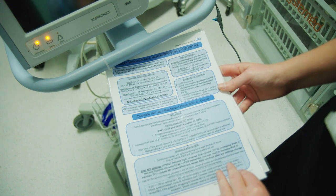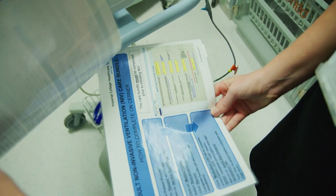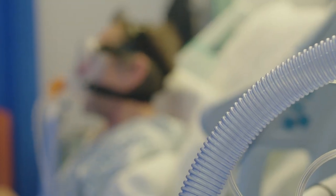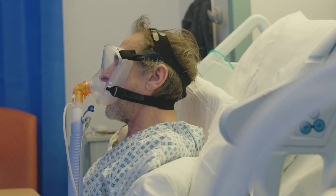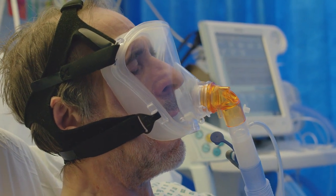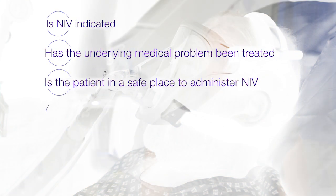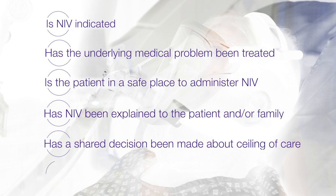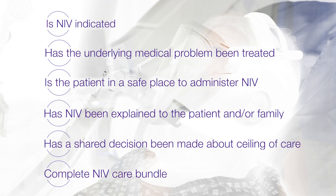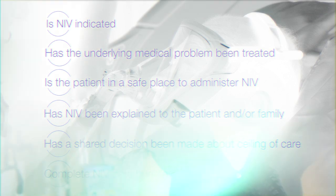The NIV algorithm is there to help guide you through the early treatment of a patient in type 2 respiratory failure requiring NIV. Now your patient is on NIV, ensure you regularly check their pressure areas particularly around the mask, ensure they receive physio, and refer to any other specialities as required including dietitian or speech and language therapy. Staff looking after patients on NIV should ensure they receive regular training and complete their NIV competencies. In conclusion, the key things to take away are: Is NIV indicated? Has the underlying medical problem been treated? Is the patient in a safe place to administer NIV? Has NIV been explained to the patient and/or their next of kin? Has a shared decision been made with the patient about their ceilings of care? Then complete the NIV bundle and CERNA prescription. And finally, safe, effective and patient-centred care equals high quality care.